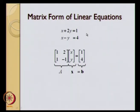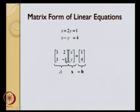If we had multiple variables, the coefficients of the first equation will go on the first row. The right-hand side of the equation forms the vector b. Likewise, we have 1 multiplied by x plus minus 1 multiplied by y equal to 4, so that becomes our second equation. We might have n number of equations and m number of unknowns. The number of rows will be equal to the number of equations, and the number of columns will be equal to the number of variables.